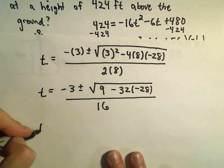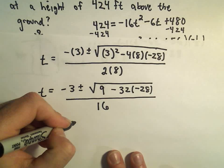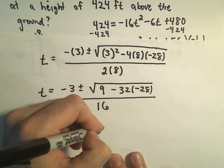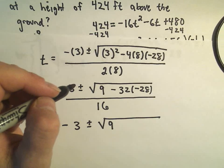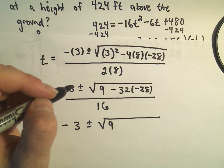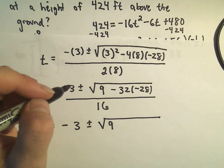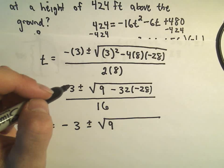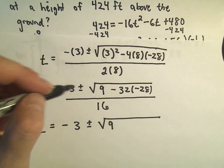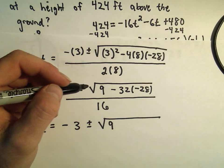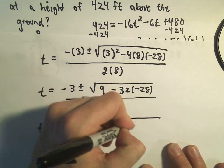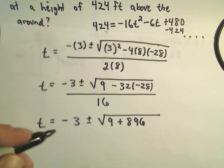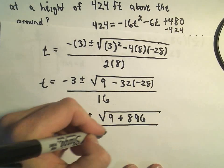So at this point, we've got t equals negative 3 plus or minus the square root of 9, I'm going to cheat here a little bit and use a calculator. If we take negative 32 times negative 28, I'm getting that to be positive 896, over 16.